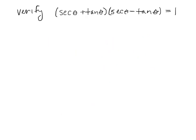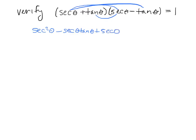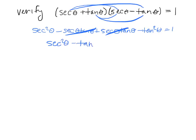I need to verify that one side equals the other. Whenever I see two binomials being multiplied, I take everything in one bubble times everything in the other — you could also use a box. So we have secant squared minus secant tangent plus secant tangent minus tangent squared. These two middle terms are going to cancel because one is positive and one is negative.